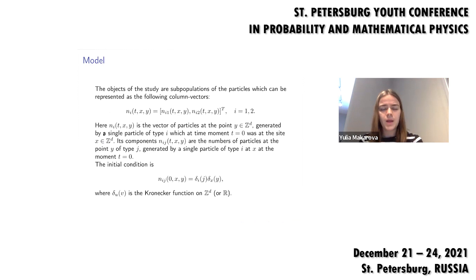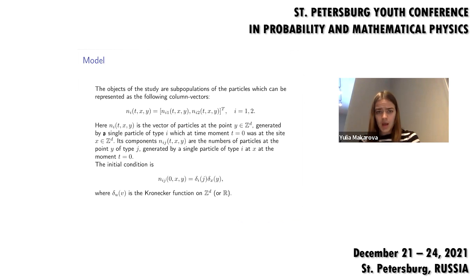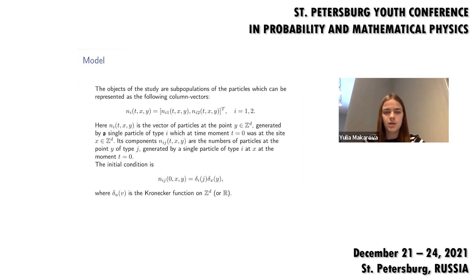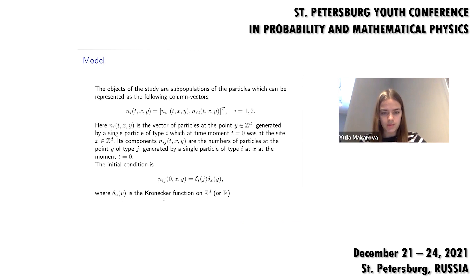The objects of our study are subpopulations of particles, which can be represented as column vectors. For example, the component n_{i1}(t, x, y) is the number of particles of the first type at time moment t at lattice point y, which were generated by a single particle of type r that at the initial time moment was located at lattice point x. We also have the initial condition where delta is the Kronecker delta function over the lattice Z^d.